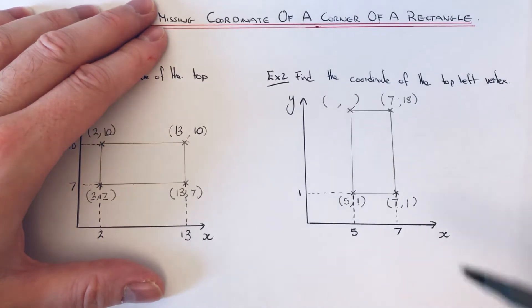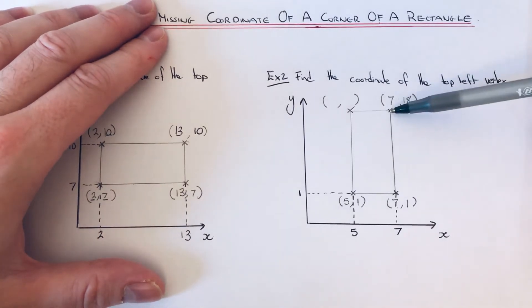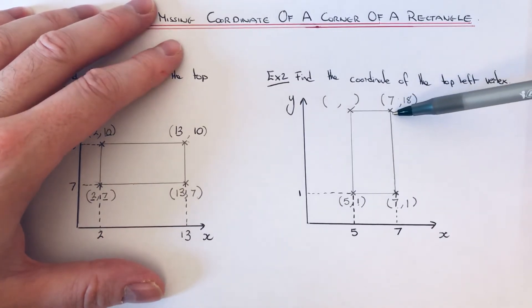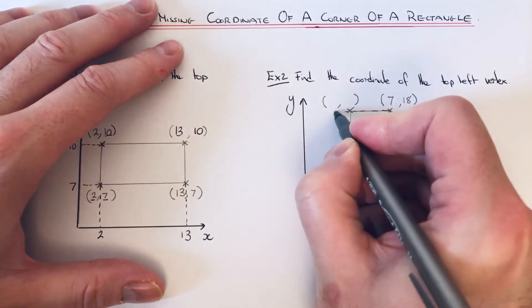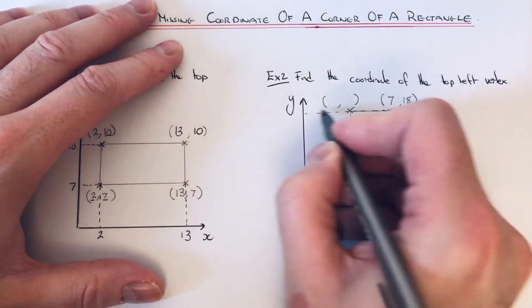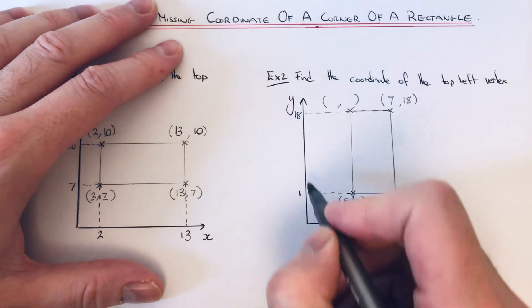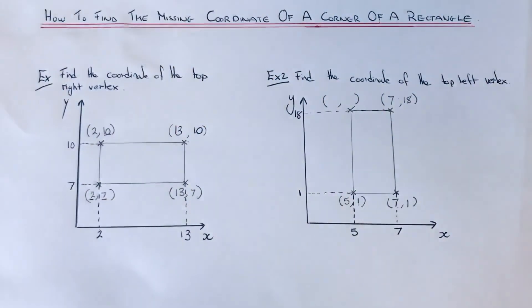The final vertex is seven comma eighteen. We got seven on the x-axis already. If we do a line going across, that would be eighteen here. So mark the numbers on the x and the y-axis.